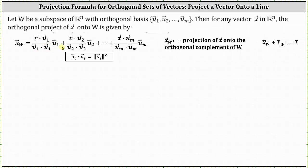Then we add the next term: vector x dotted with vector u_2 divided by vector u_2 dotted with itself, times vector u_2, and the pattern continues. It's worth noting that instead of dot products in the denominators, sometimes you'll see this formula expressed where the denominators are the square of the magnitudes of vectors u_1, u_2, and so on.